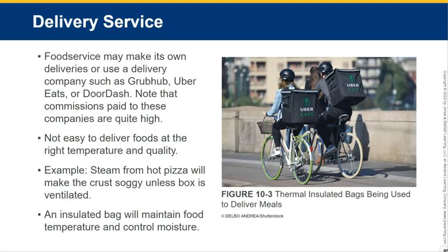For delivery service, food services may make their own deliveries or use a delivery company like Grubhub, Uber Eats, or DoorDash. Note that the commissions paid to these companies are quite high. It's not easy to deliver foods at the right temperature and quality — depending on how far they have to travel, quality can quickly diminish and temperature may become too cold.